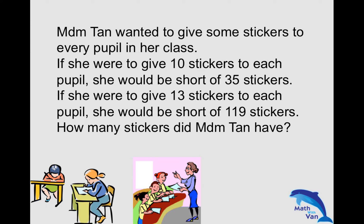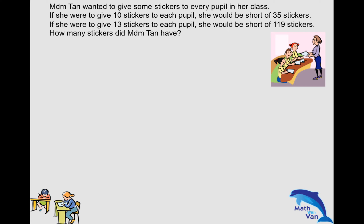So the same thing, what is always the same is the actual original number of stickers that Madame Tan had. So back in reference with regards to that, this is how you want to draw the model. And with regards to Scenario 1, if she were to give 10 stickers to each pupil, she would be short of 35 stickers.